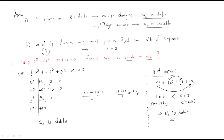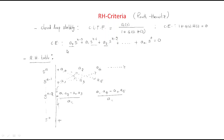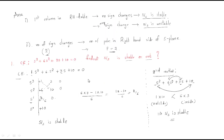This is the procedure to test whether a given characteristic equation represents a stable system or not. In this session we discussed the RH table, how to solve it, the theory behind it, and the shortcut method. Thank you.